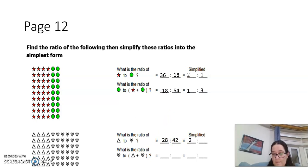Hearts to both triangles and hearts, so 42 to 70. What is the common factor? It's also 14, and it's going to be 3 to 5. Now it's easy for you to complete the rest of the page.